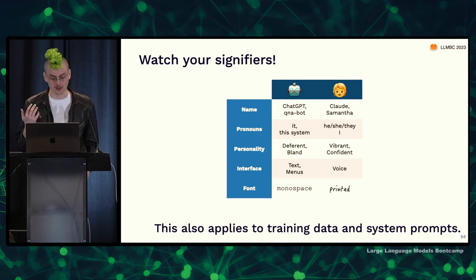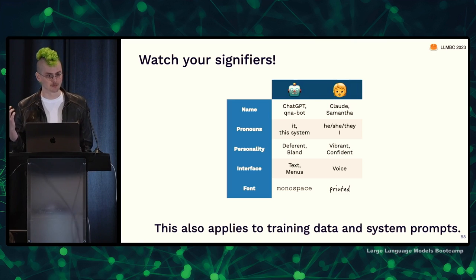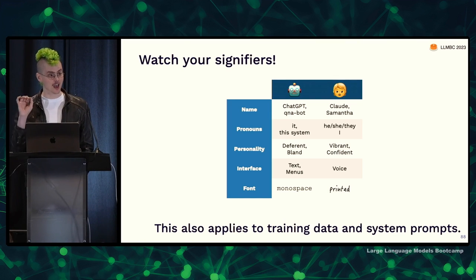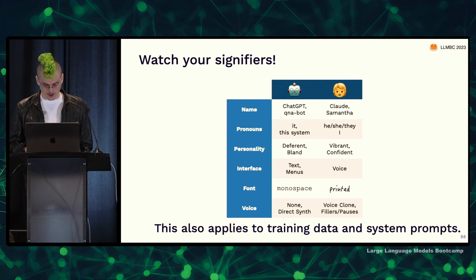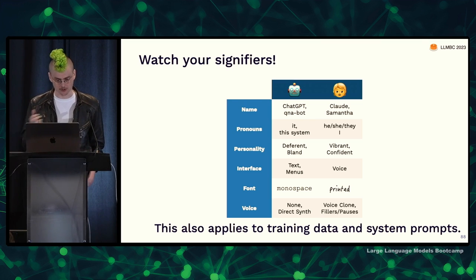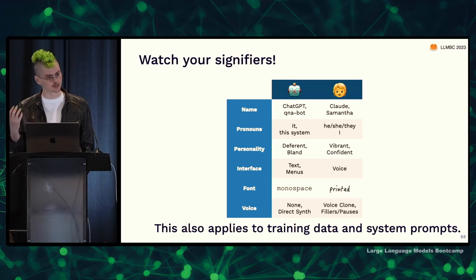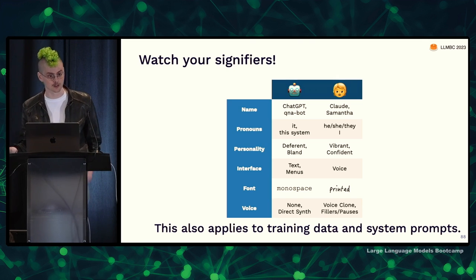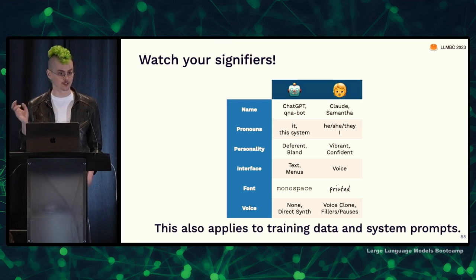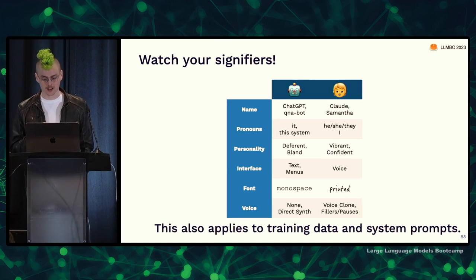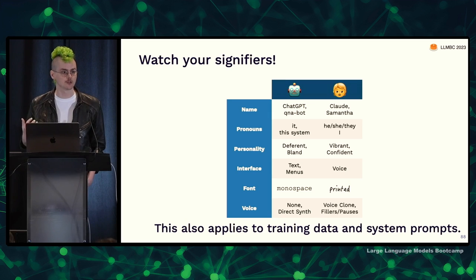Even something as simple as the font can be helpful — make it look machine-like, monospaced. Don't signify humanity with a handwritten typeface. Maybe have it produce generation all at once, like a print statement, rather than streaming. If you do choose voice, make sure it signifies machine-likeness — sound more like the machine voices we've become used to, rather than doing voice clones or adding filler words, pauses, and expressions of emotion that make something seem more human. If you do choose to signify humanity, know that you are signifying affordances that you're going to have a lot of trouble delivering.